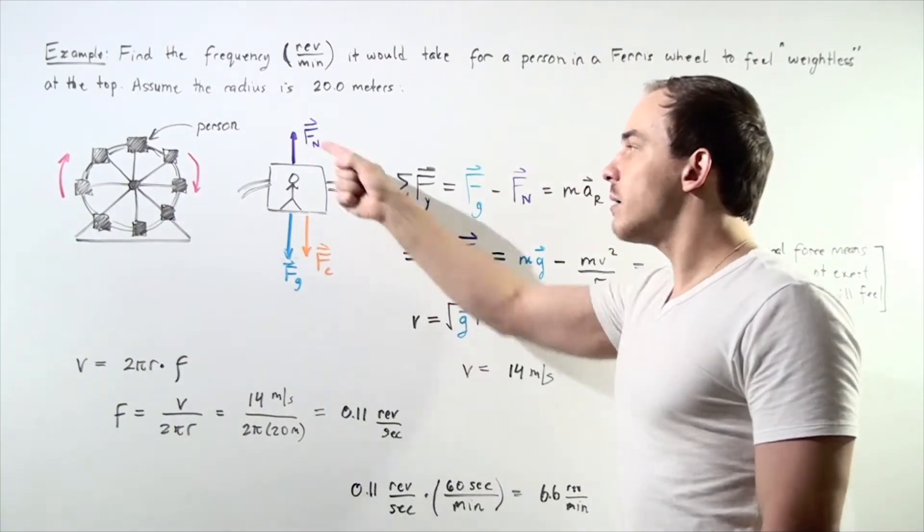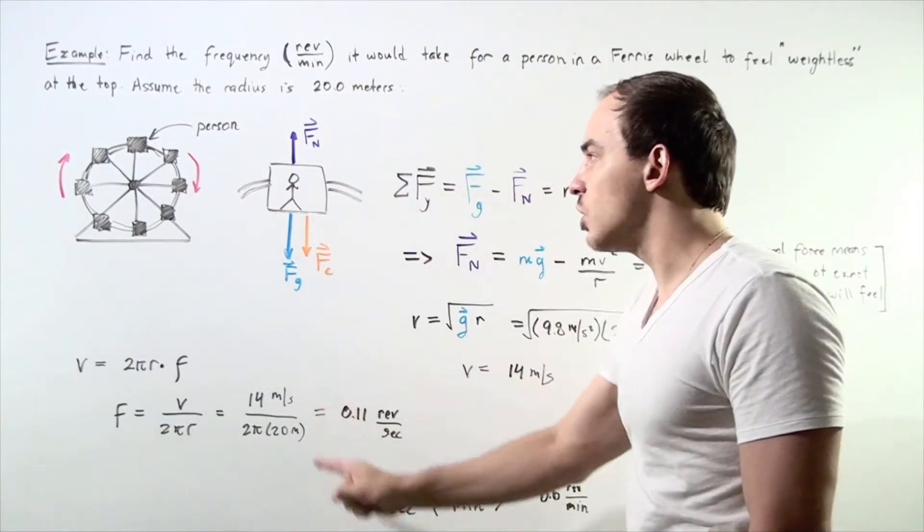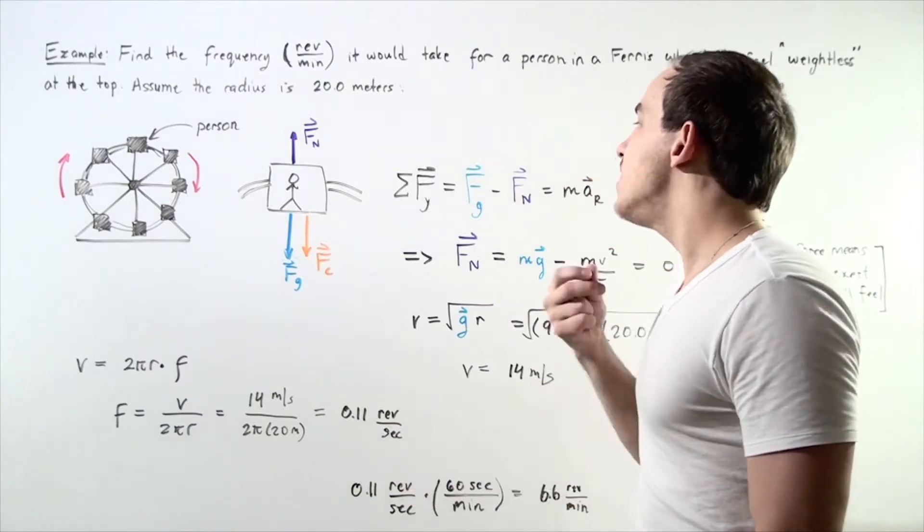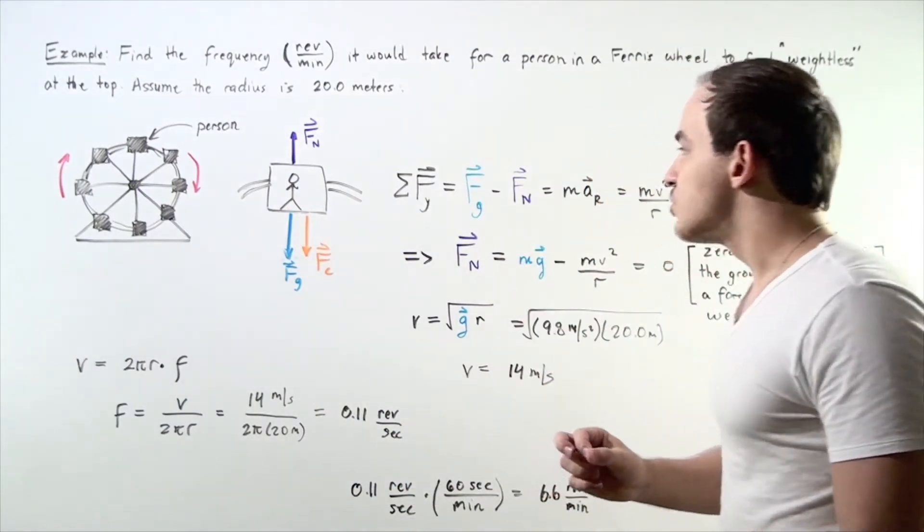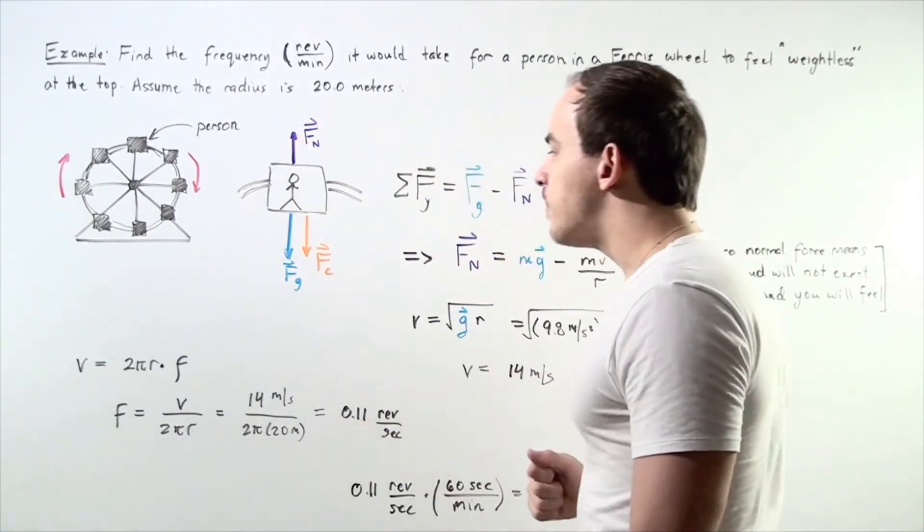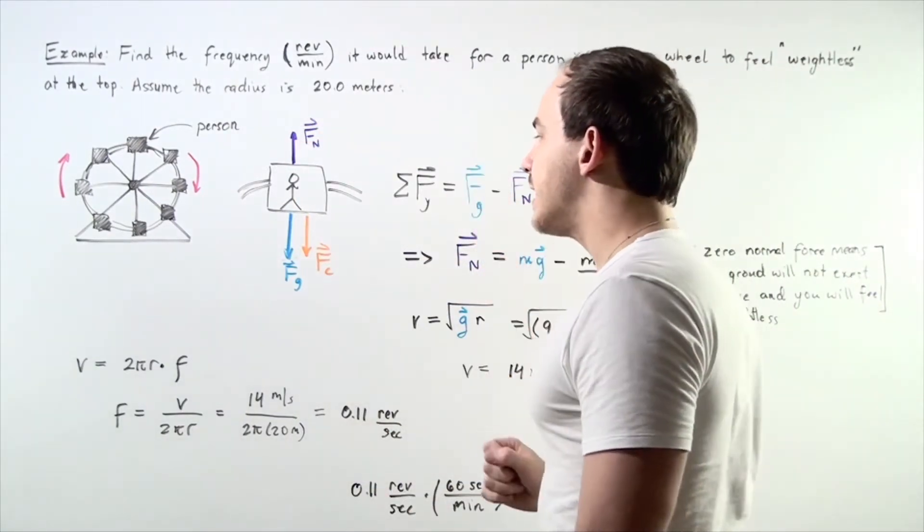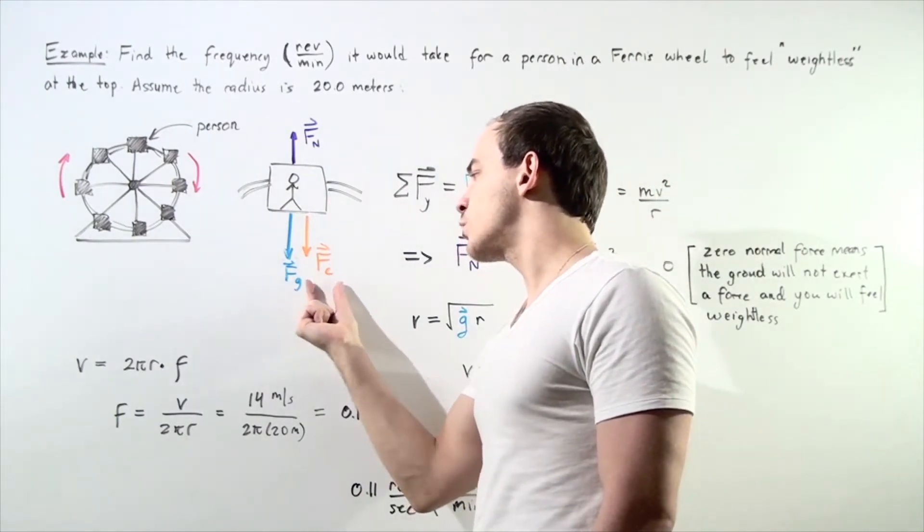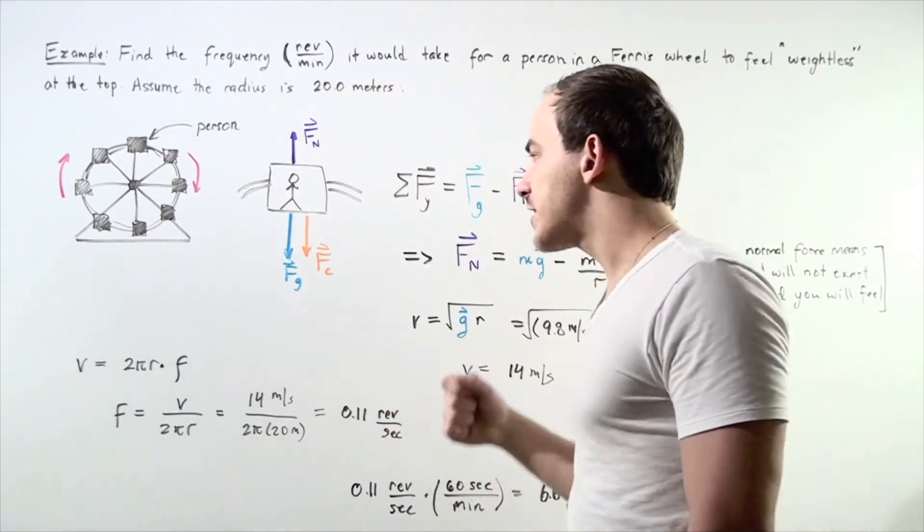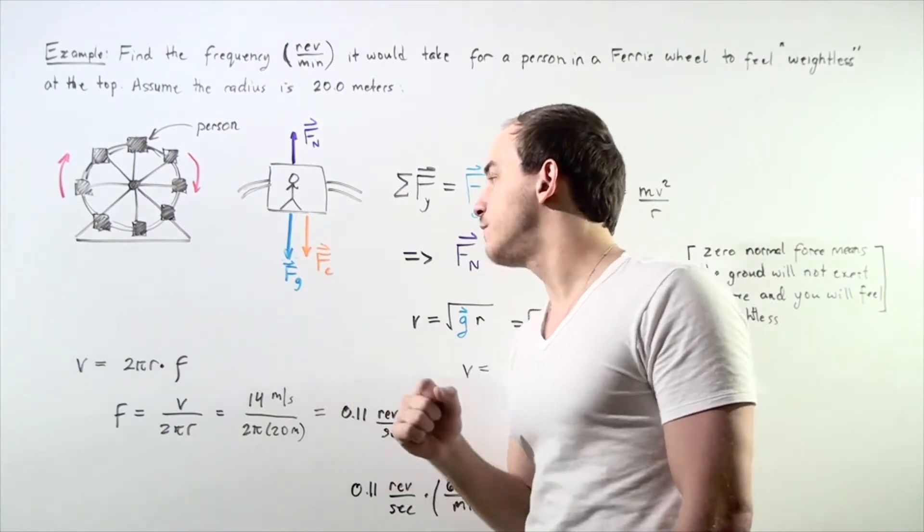We're essentially summing up all the vector forces along our y-axis and then we set the normal force equal to zero. Let's choose downward to be positive and upward to be negative. We choose downward to be positive because our centripetal acceleration is in the same direction as our gravitational force.